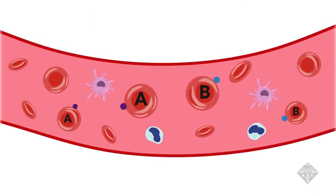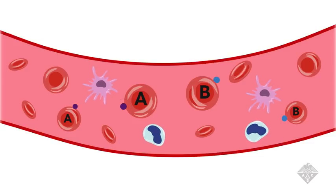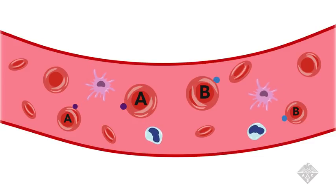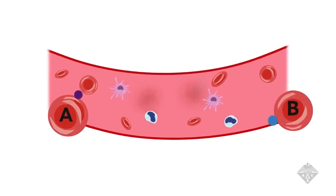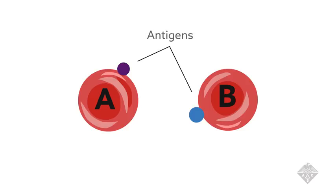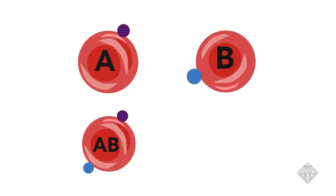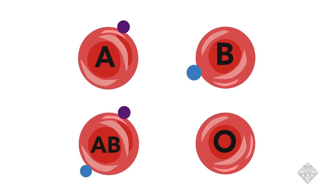Type A or B blood has specific sugars on the outside of its cells. These sugars are recognized by the immune system, and if they don't match the type of blood that's already in an individual, those cells are destroyed. Because these sugars are recognized by the immune system, they're called antigens. Type AB blood has both antigens, and type O blood has none.